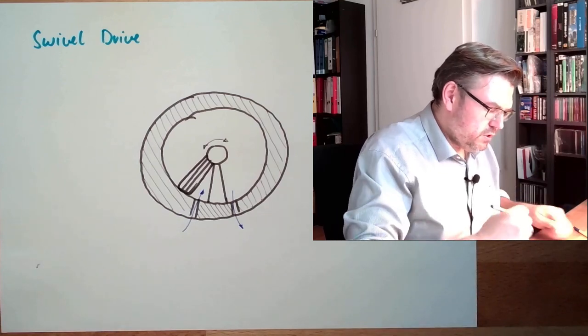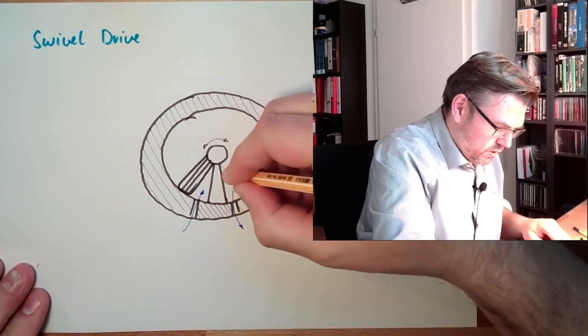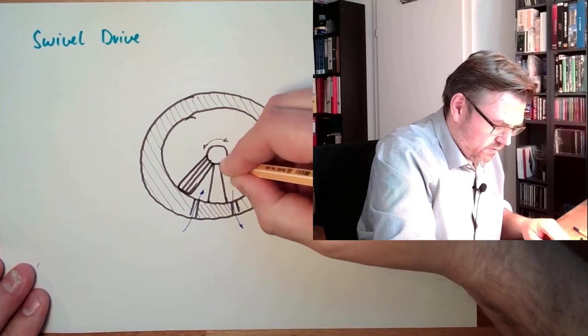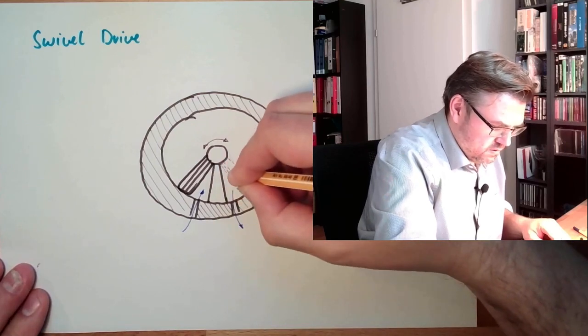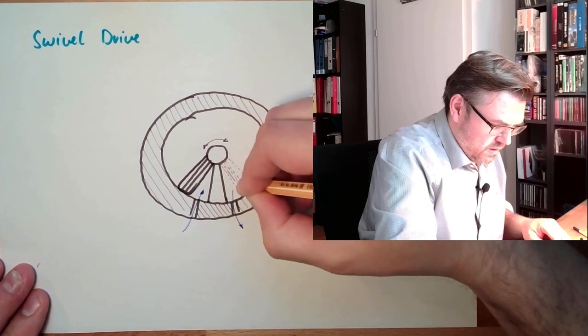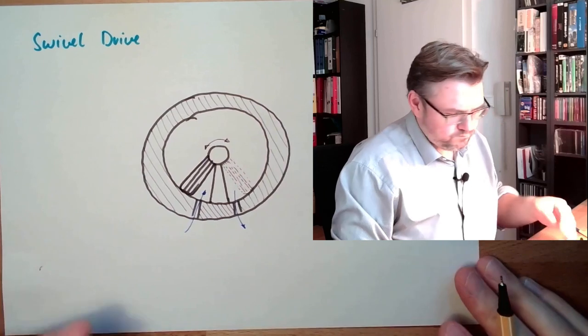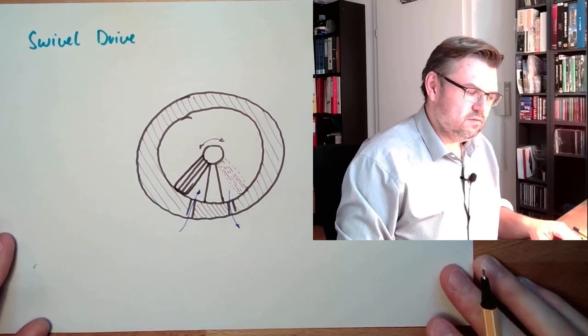So this is one position, and the second position would then be here on this side. Like I said, there are seals. They have the same task as the piston seals. And that's it, swivel drive.